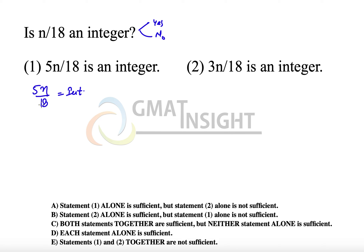Many students reason that since 5 and 18 have no common factor, for 5n/18 to be an integer, n itself must be divisible by 18, so n should be 18, 36, 54, etc. They conclude n is always divisible by 18, and say the first statement alone is sufficient. That's where they make a mistake, and that's where Rule 3 and Rule 4 come into play.